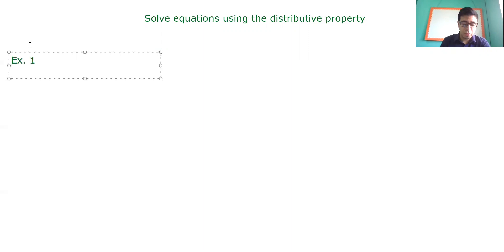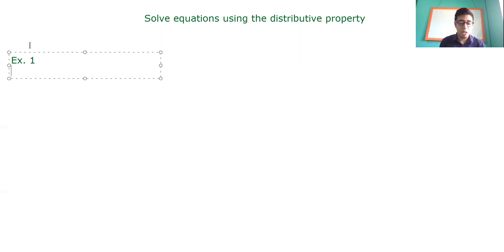In example number one, we have that each of the graphic novels in Shen's collection increased in value by $3.50 in the last few years. So if each graphic novel has the same value, what was the original value of the graphic novels? We need to identify the original value that the novels had before the price increase, because the price increased by $3.50 in the last few years.